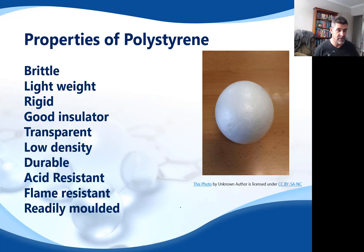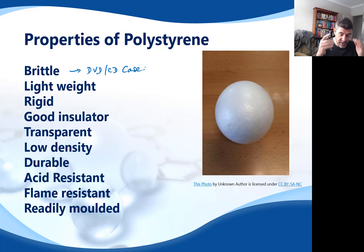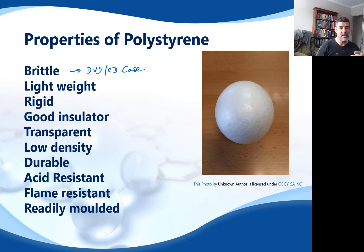These big benzene rings actually create something that's a little more brittle. The purer version of polystyrene is used to make things like CD or DVD cases. As an example of the application: they have a level of transparency, they're quite lightweight but relatively rigid — but of course you can snap them; they will not bend, they'll just snap.